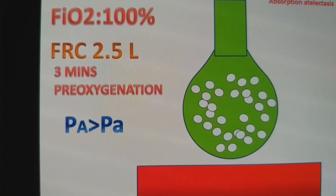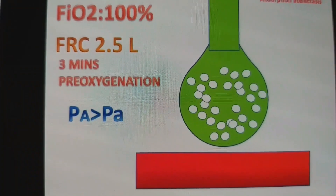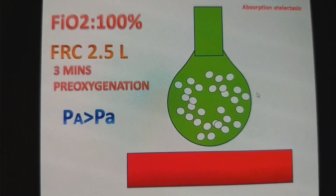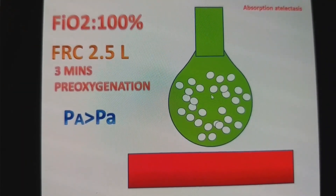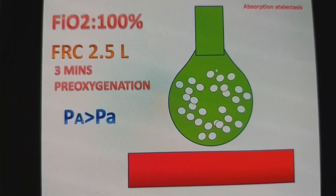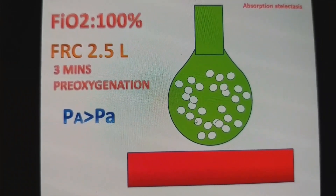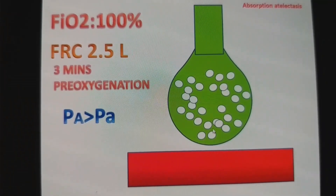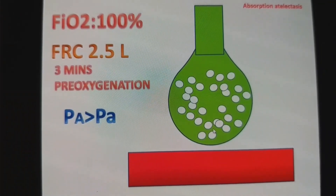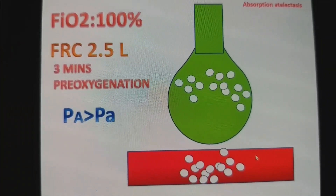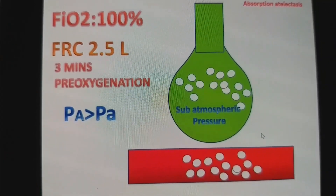What is absorption atelectasis? When we pre-oxygenate the patient with 100% oxygen, the alveoli are fully filled with 100% oxygen. There is a partial pressure gradient between the alveoli and the blood for oxygen, and because of this gradient, oxygen passively diffuses into the underlying blood vessel.